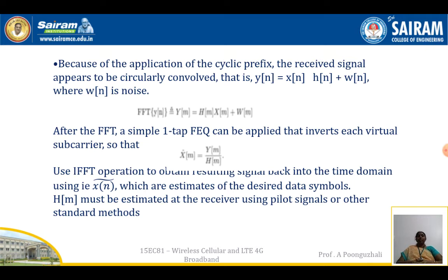After the FFT, a single-tap frequency equalizer is applied, which inverts each sub-carrier. The demodulated signal X-hat(N) is Y(N) divided by H(N), meaning the received signal is scaled by the factor H(N). Then the IFFT operation is applied, converting the resulting signal back into the time domain to estimate the desired data symbols. H(N) can be estimated at the receiver using pilot signals.